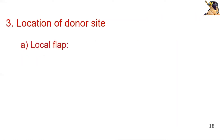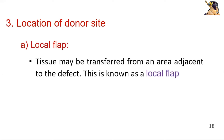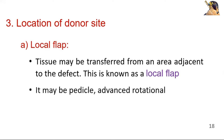Location of donor site — local flap: the tissue may be transferred from an area adjacent to the defect. This is known as a local flap. It may be a pedicle, advancement, or rotational flap. For example, the palatal rotational flap based on the greater palatine vessels, used for oroantral fistula reconstruction or repair, is a local flap.